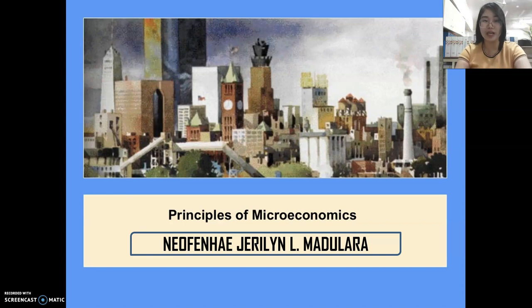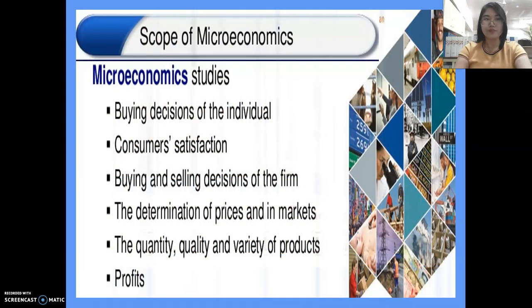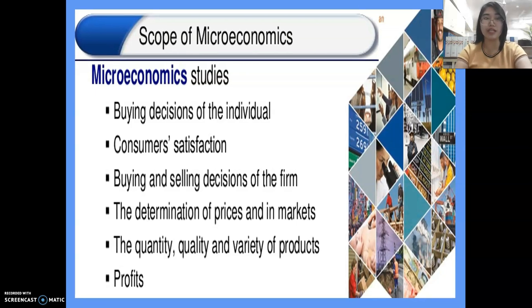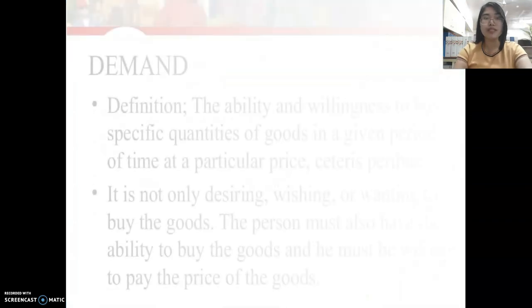The scope of microeconomics includes the following: decisions of the individual consumer, satisfaction, buying and selling decisions of the firm, determination of prices and markets, quantity, quality and variety of products, as well as profits. These are basically the major scopes of microeconomics.